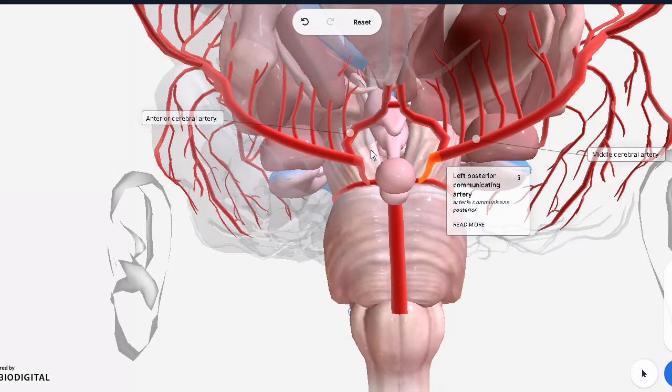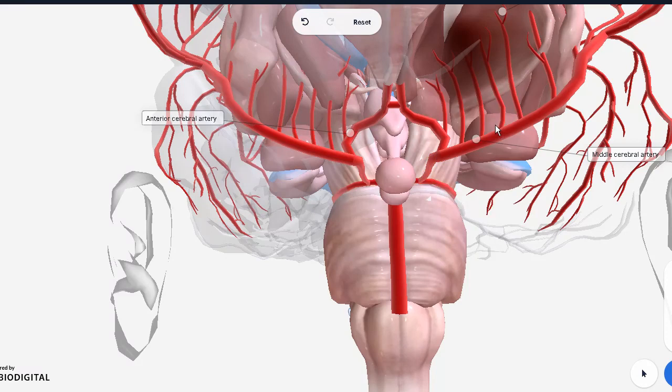And notice how the midbrain right over here, it forms a close proximity with this circle of Willis. But the point that I wanted to make was that anywhere along this entire length, if you have any blockage or disruption of the artery, this will cause compromise to the blood supply.